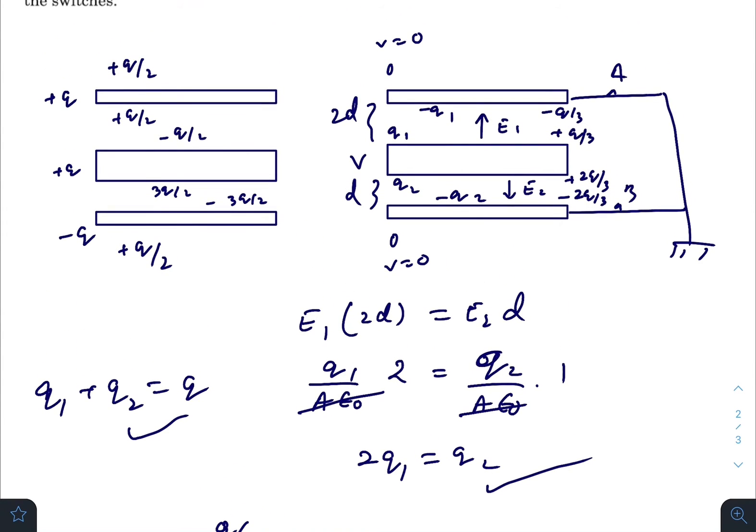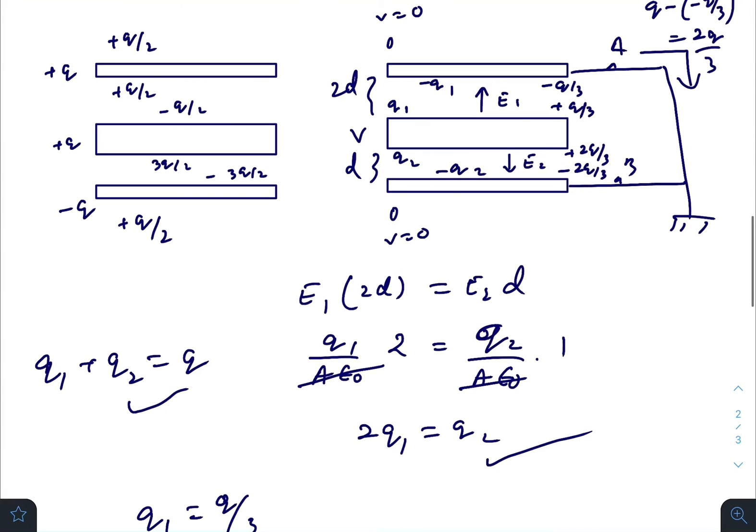From here we can say how much charge have flown through the switch. Here it was initially q, now on this plate there is minus q by 3. That means charge have flown in this direction and the amount of charge will be 2q by 3. So this amount of charge flown from the plate to the ground. On the lower plate it was initially minus q, now it is minus 2q by 3. That means charge have flown in this direction.